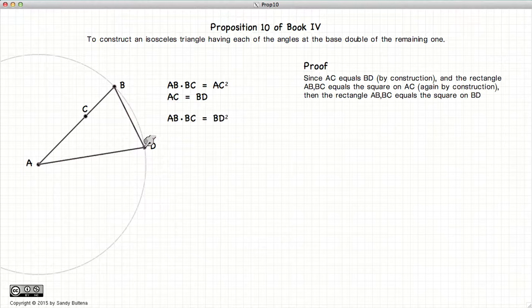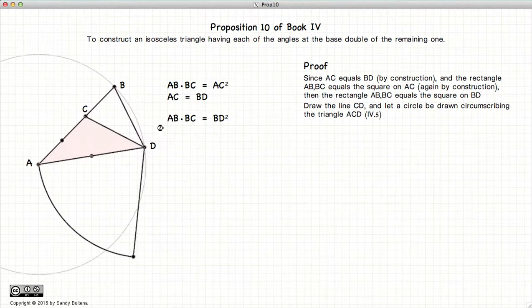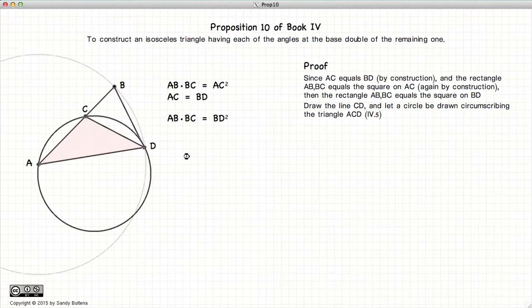Now since BD is equal to AC by construction, we can take this equation here, substitute BD for AC and end up with this equation. So there's nothing fancy going on yet. Now we're going to draw the line CD. And now we have drawn a circle that passes through all the vertices of this triangle using the methods described in Proposition 5 of this book.